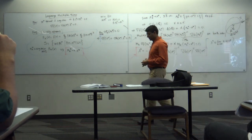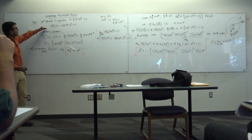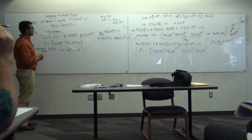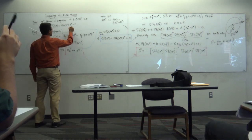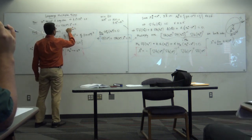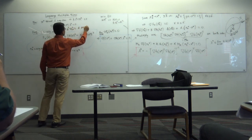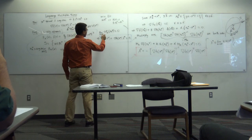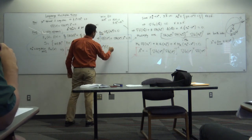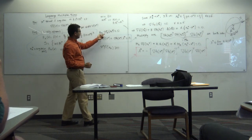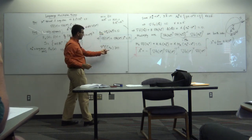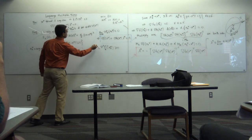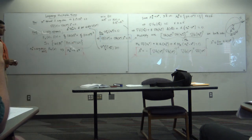There is also the second-order necessary condition part of the Lagrange multiplier theorem: dᵀ∇²L(x*)d ≥ 0 for all d in V(x*). This comes from looking at the second derivative of F_k being positive semi-definite, and you can use that result to prove the second-order necessary conditions for optimality.